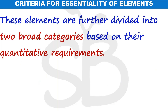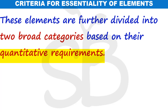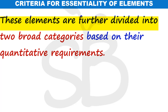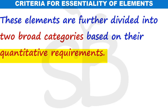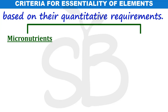These essential elements are further divided into two broad categories based on their quantitative requirements. Those two categories are micronutrients and macronutrients.